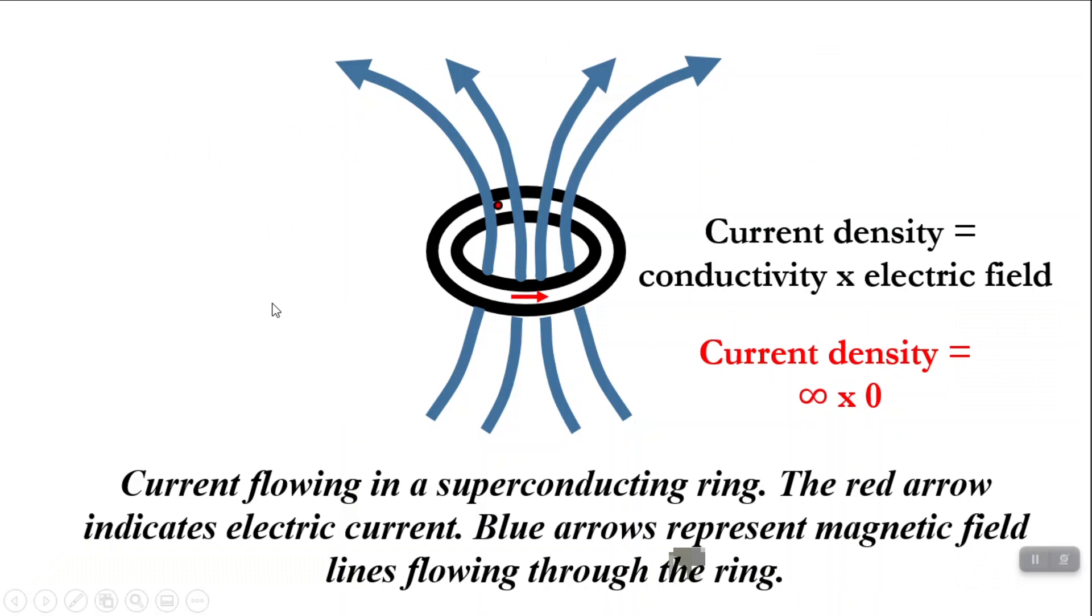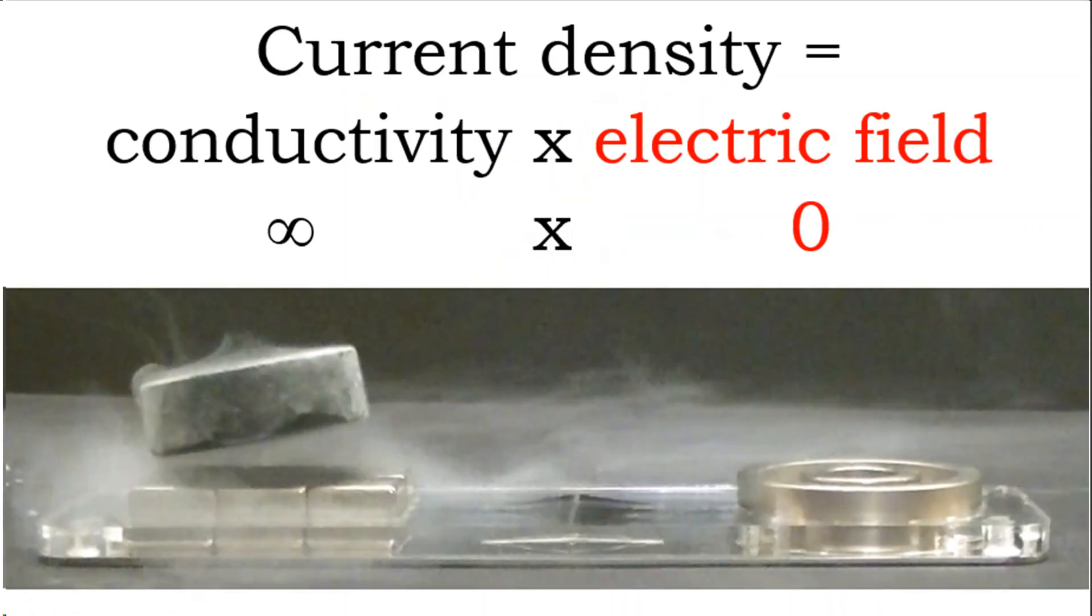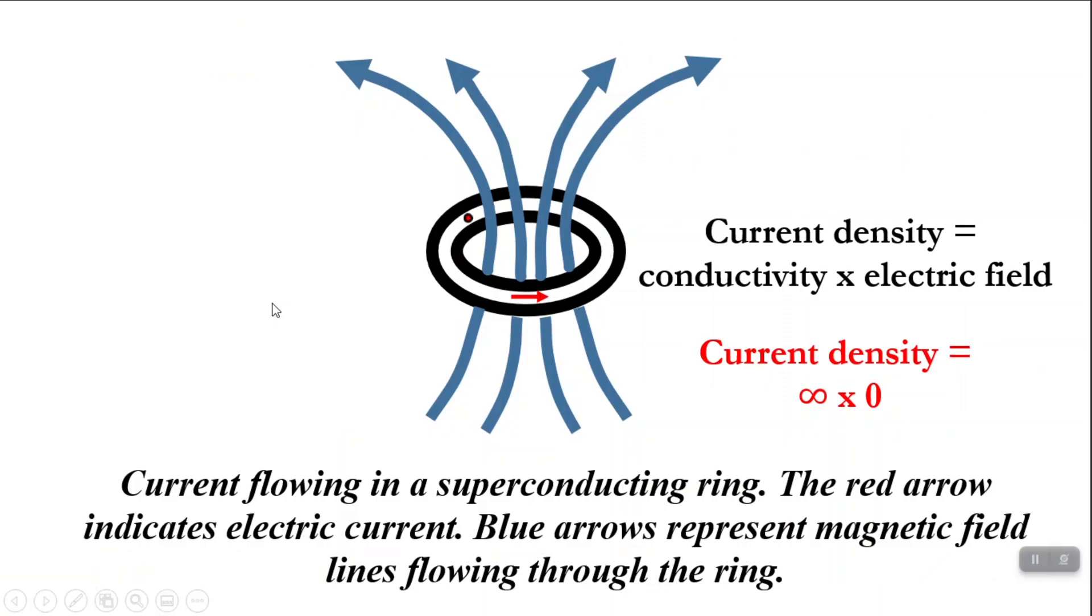The electric current flowing around the superconducting ring produces a magnetic field that passes through the ring. Recall that changing magnetic fields produce electric fields. But we've got to remember that the electric field in our superconductor has to remain zero. Because of this, the magnetic field moving through the superconducting ring can't change. And if the magnetic field can't change, then the electric current around the ring can't change either. It's got to flow forever without ceasing.